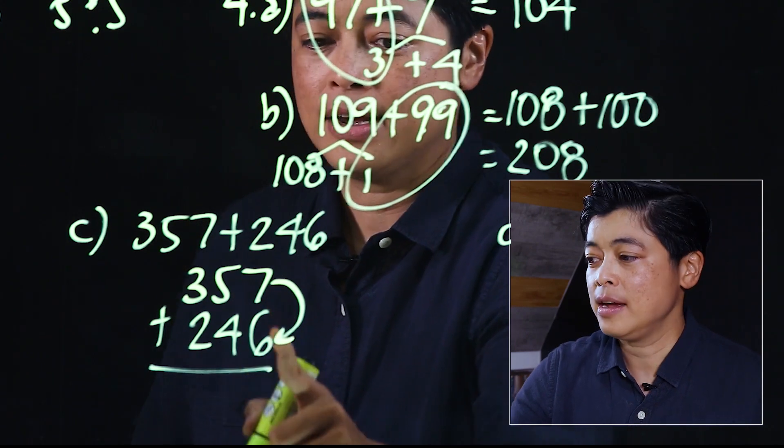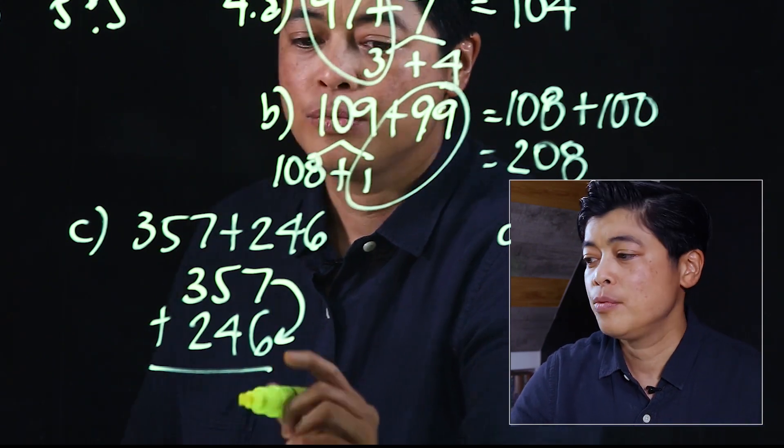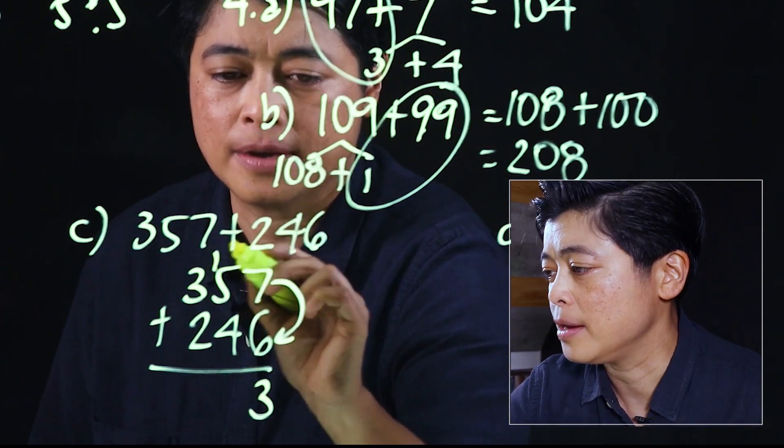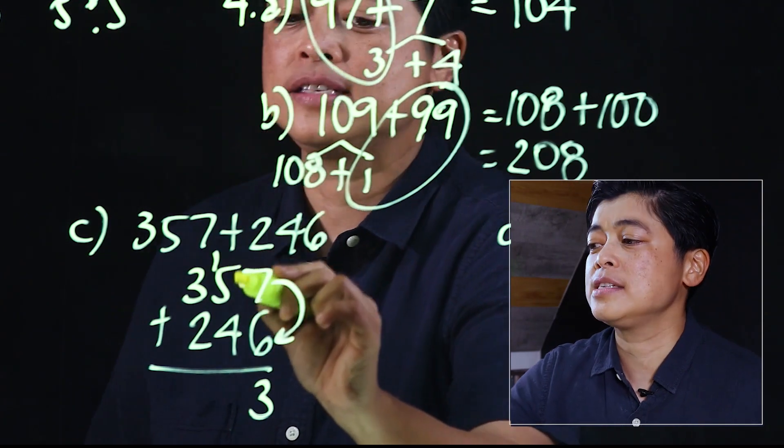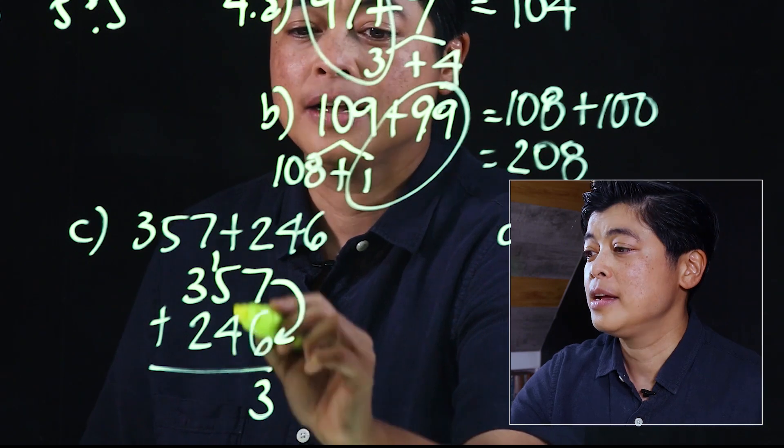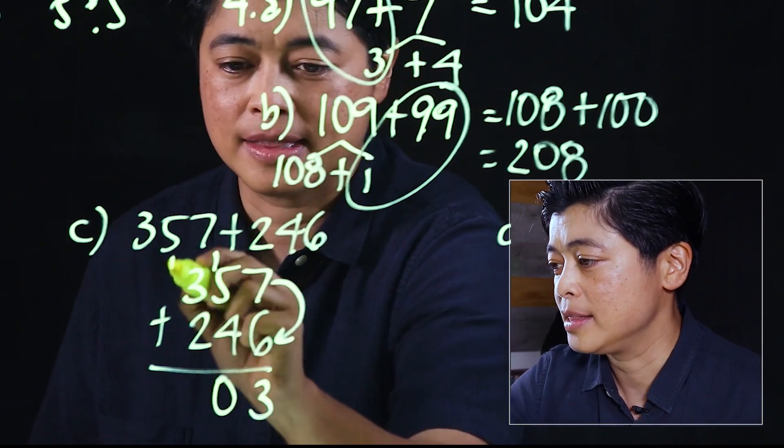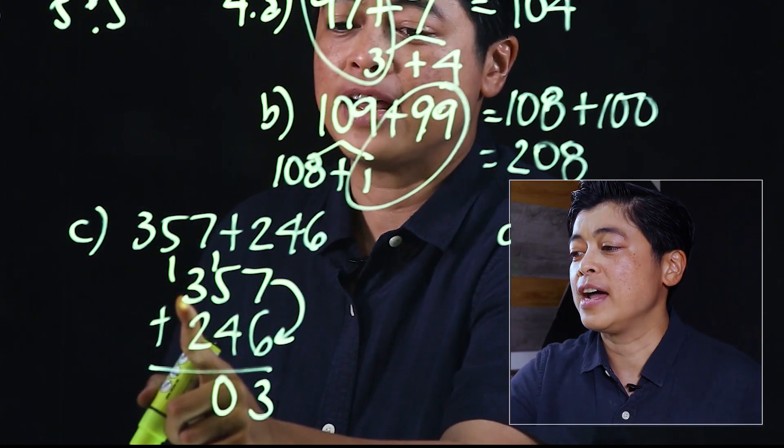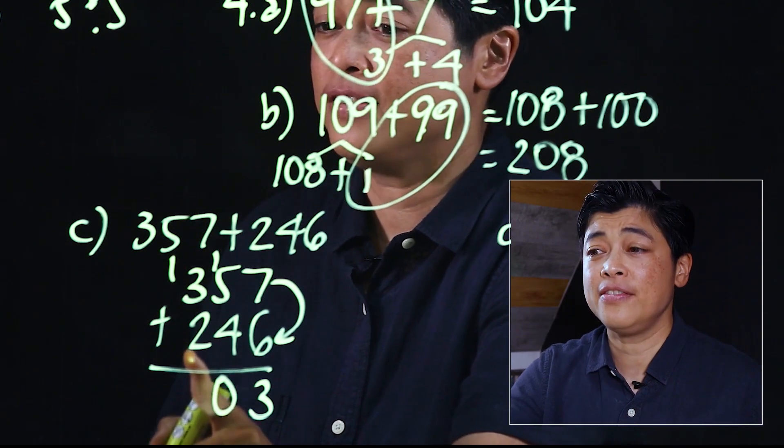I have an extra 3 which makes it 13. So this is 5 and 4 together makes 9, plus 1 makes it 10. So that means 3 plus 2 is 5, plus 1 is 6. So again we want to make use of the pairings.